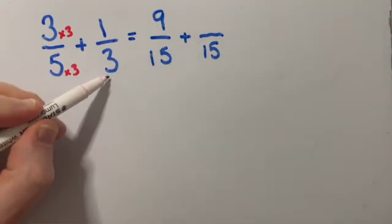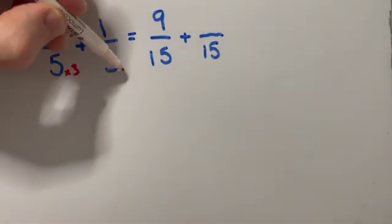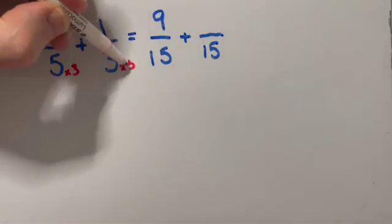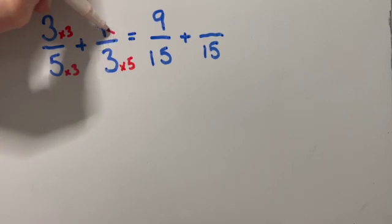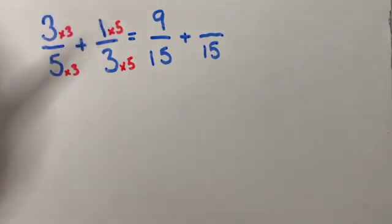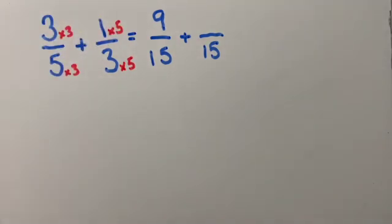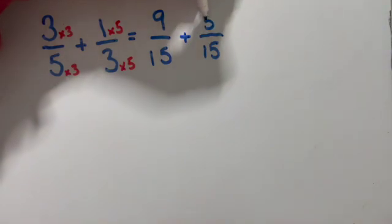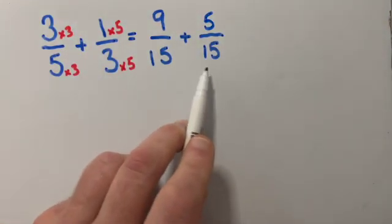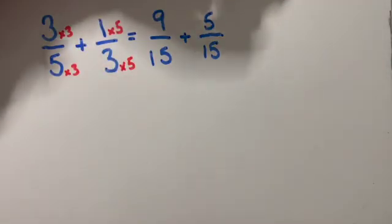Then what do I multiply three by to make 15? Three times five makes 15. So I do the same at the top. So one times five is five. And now because my denominators are the same, I'm ready to add them.